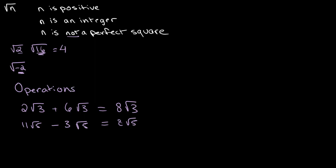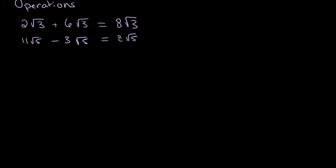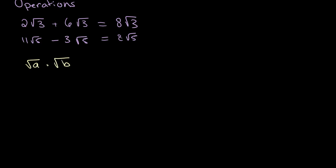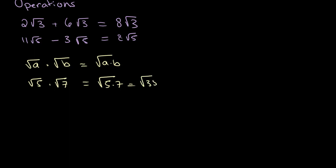Another operation we can perform is multiplication. We do that using the rule: the square root of a multiplied by the square root of b is equal to the square root of a times b. For example, the square root of 5 multiplied by the square root of 7 can be written as the square root of 5 times 7, which is the square root of 35.